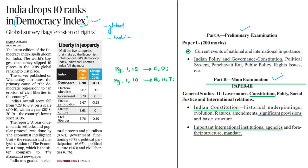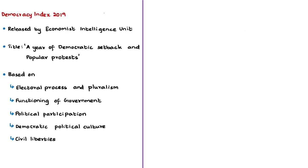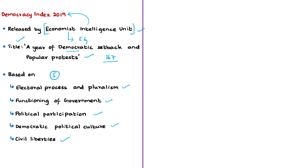The Democracy Index is released annually by the Economist Intelligence Unit, which is a sister company of the UK-based Economist Group. The Economist Intelligence Unit has released the Democracy Index of 2019 under the title 'A Year of Democratic Setback and Popular Protest' for 167 countries across the globe. This index is calculated based on five parameters: electoral process and pluralism, functioning of government, political participation, democratic political culture, and civil liberties.